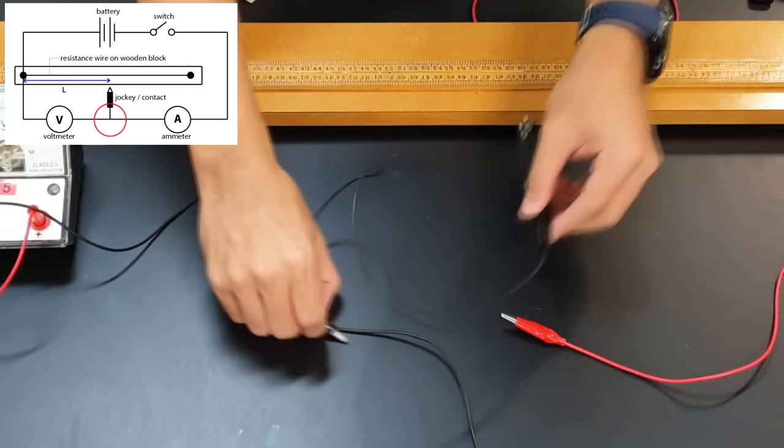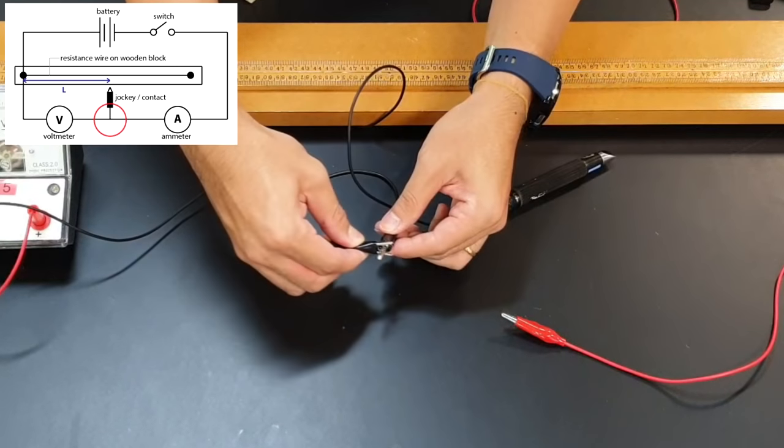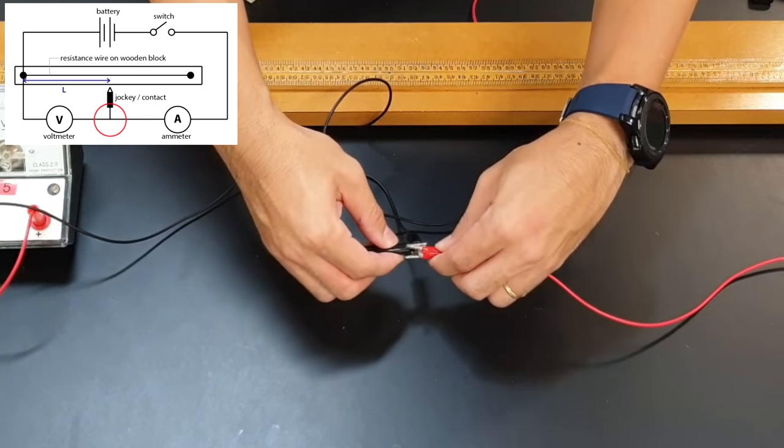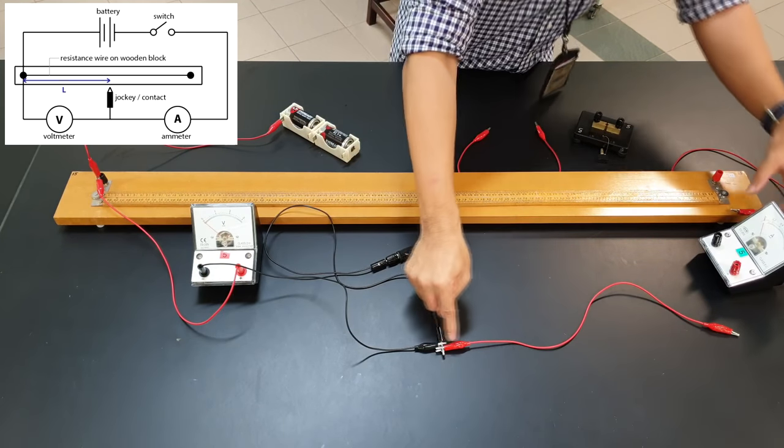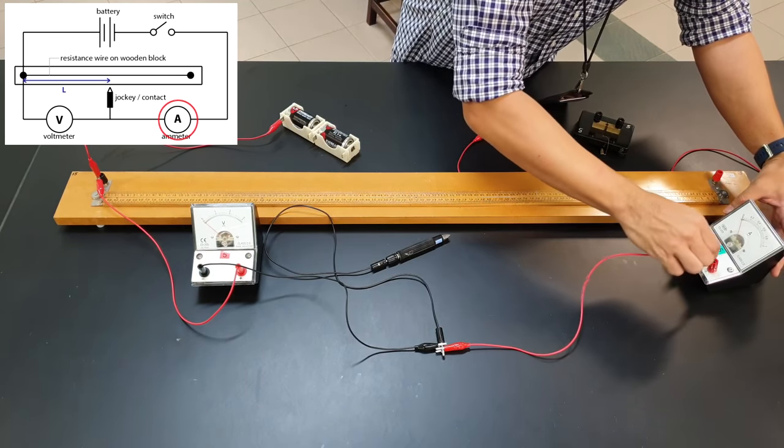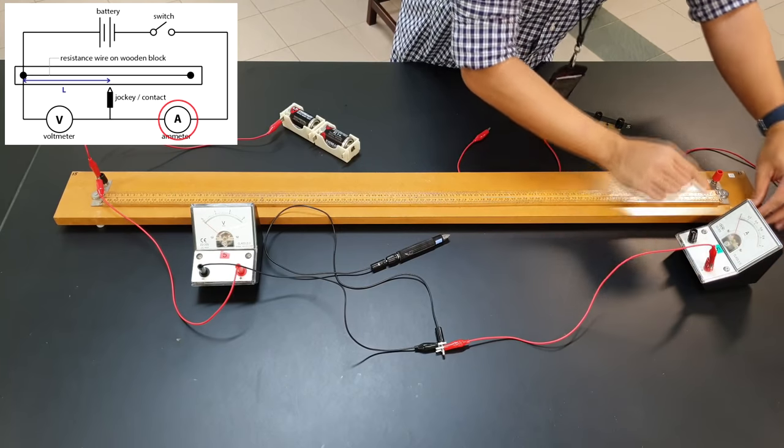Next, we come to this T-junction again. You can connect it this way. The jockey here is for you to tap on the resistance wire. Conventional current will continue to flow into the positive terminal of the ammeter